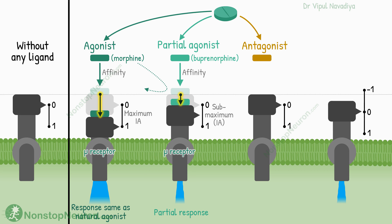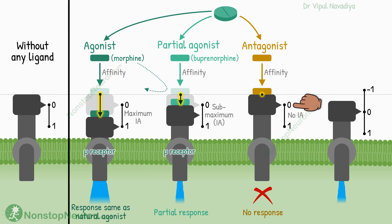Next we have antagonists. They have affinity but no intrinsic activity — they cannot induce any conformational changes in the receptor and do not initiate any response. Thus their intrinsic activity is zero. However, if agonists or partial agonists are around, antagonists prevent their action by not allowing them to bind with the receptor. For example, naloxone at the mu opioid receptor — it just sits there and does nothing, and if morphine or buprenorphine is around, it prevents them from acting.